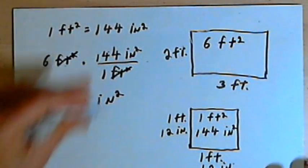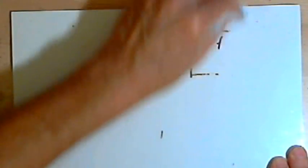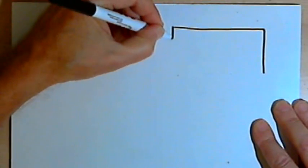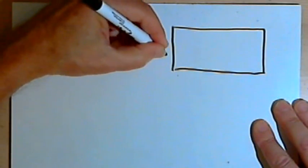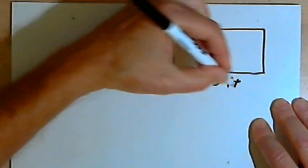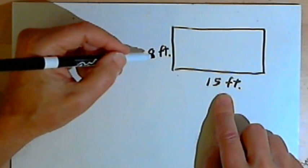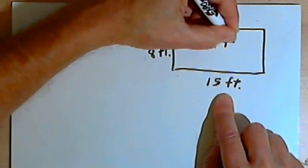Let's try another one with yards. Let's say I've got a rectangle again, and its dimensions are 8 feet by 15 feet, and I want to know how many square yards I have. I can find the number of square feet — that would be 8 feet times 15 feet, or 120 square feet.